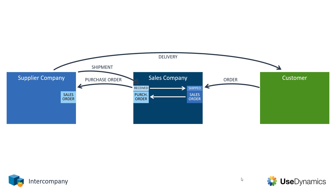they need to post shipment on their sales order. Then in your sales company, you'll need to post receipt on your purchase order and you'll need to post the shipment on your sales order to your customer.